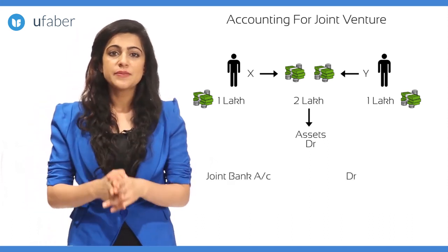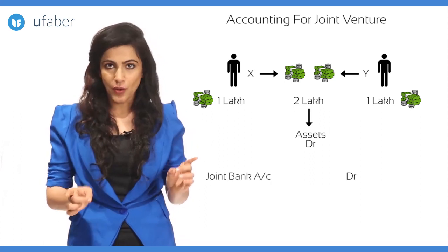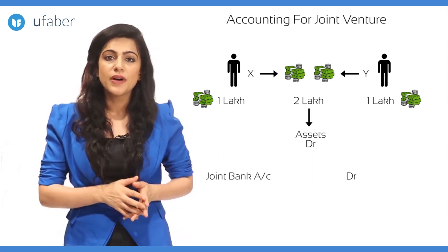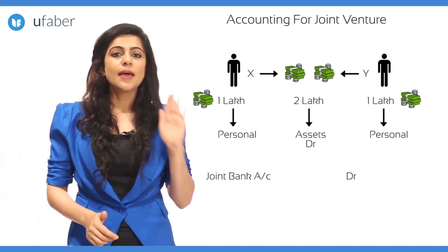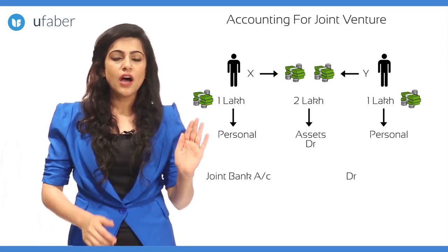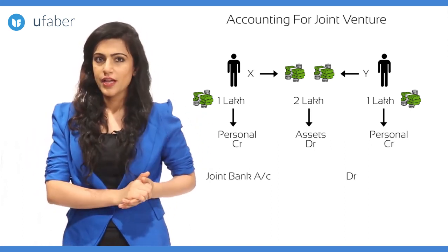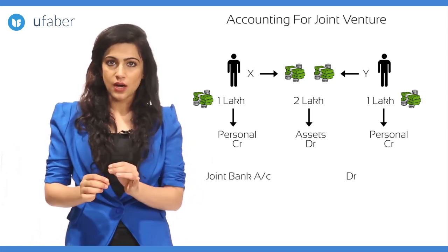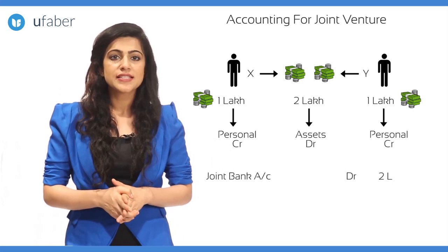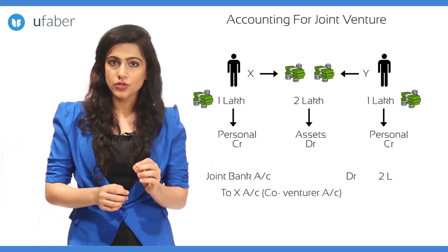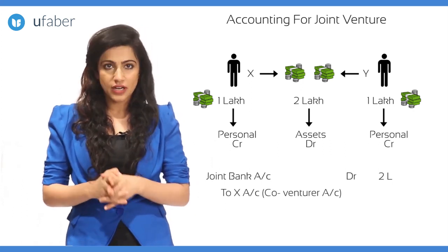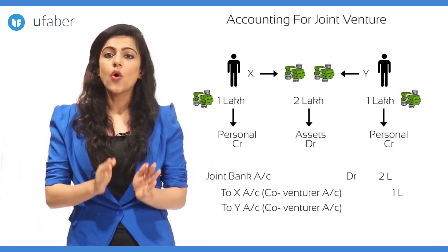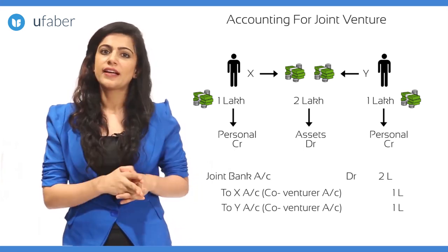The amount has been brought in by X and Y — both are persons. The golden rule for the personal account is debit the receiver, credit the giver. So the journal entry is: joint bank account debit two lakhs, to X account (co-venturer account) one lakh, and to Y account (co-venturer account) one lakh.